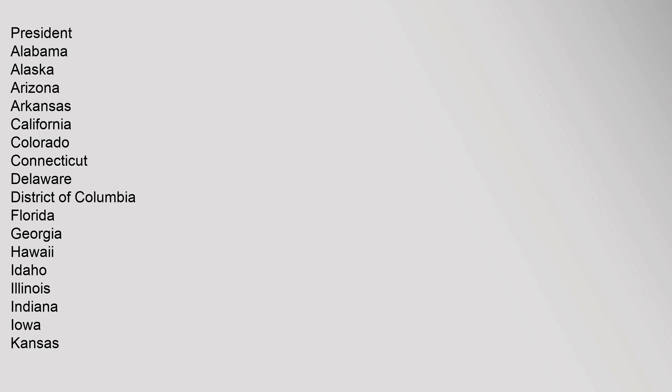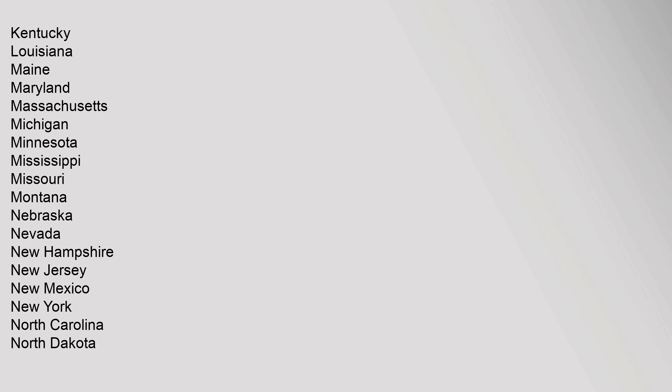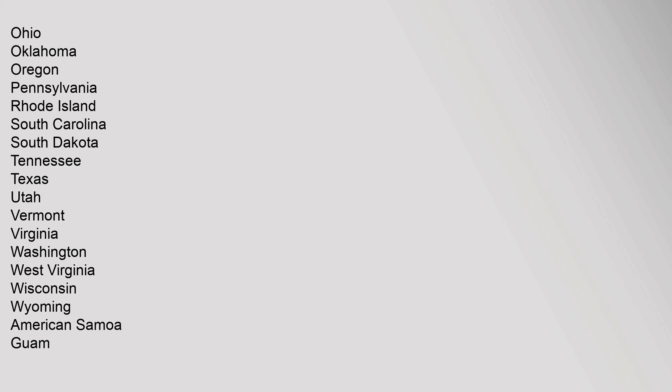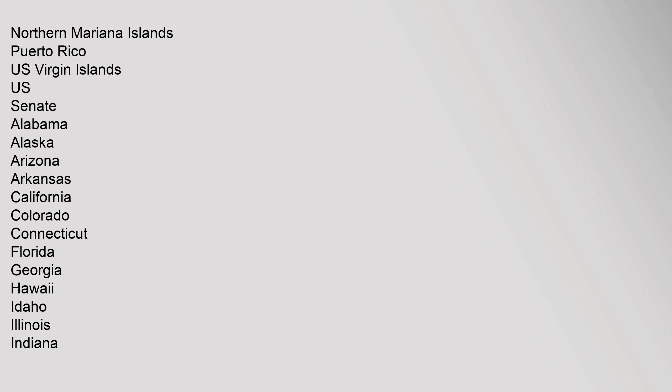See also — Presidential elections by state: Alabama, Alaska, Arizona, Arkansas, California, Colorado, Connecticut, Delaware, District of Columbia, Florida, Georgia, Hawaii, Idaho, Illinois, Indiana, Iowa, Kansas, Kentucky, Louisiana, Maine, Maryland, Massachusetts, Michigan, Minnesota, Nebraska, Nevada, New Hampshire, New Jersey, New Mexico, New York, North Carolina, North Dakota, Ohio, Oklahoma, Oregon, Pennsylvania, Rhode Island, South Carolina, South Dakota, Tennessee, Texas, Utah, Vermont, Virginia, Washington, West Virginia, Wisconsin, Wyoming, American Samoa, Guam, Northern Mariana Islands, Puerto Rico, U.S. Virgin Islands.